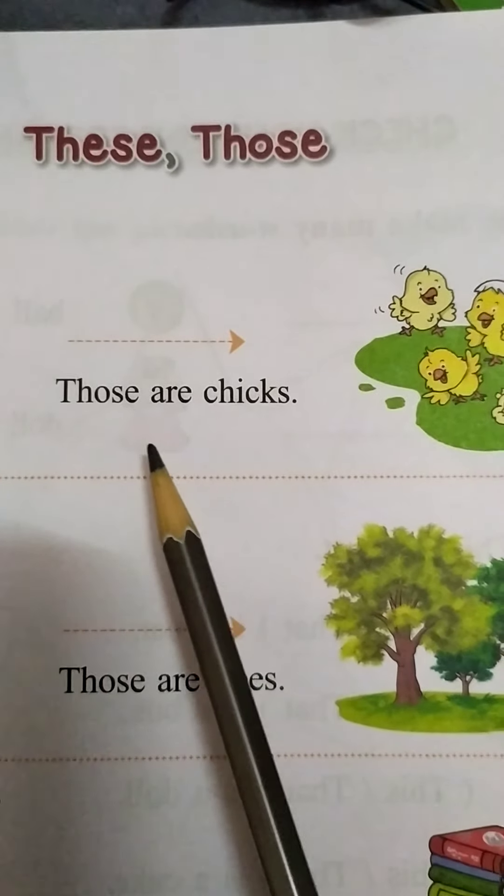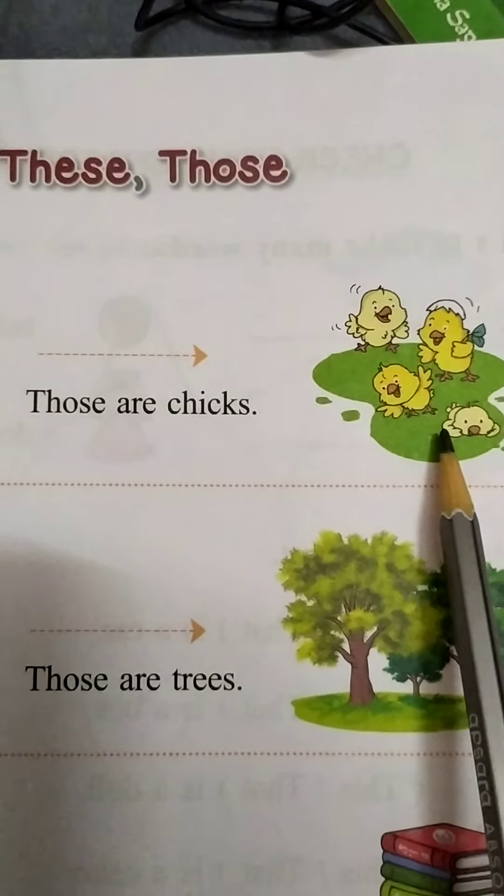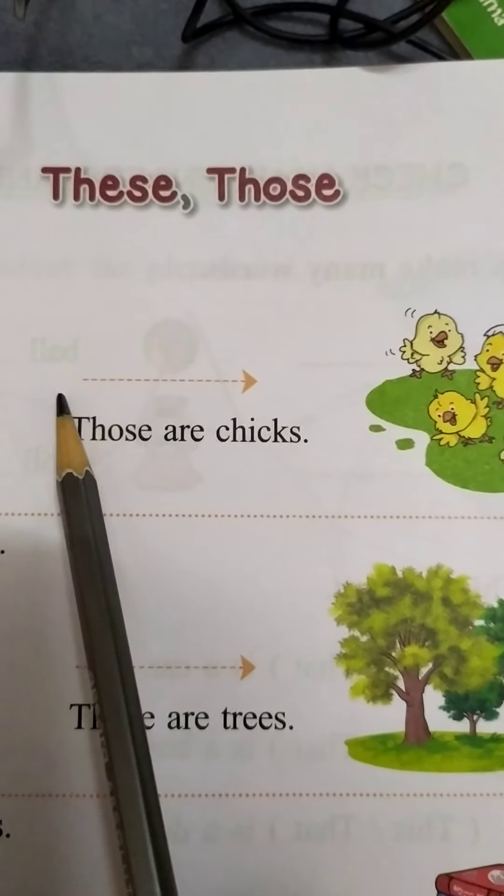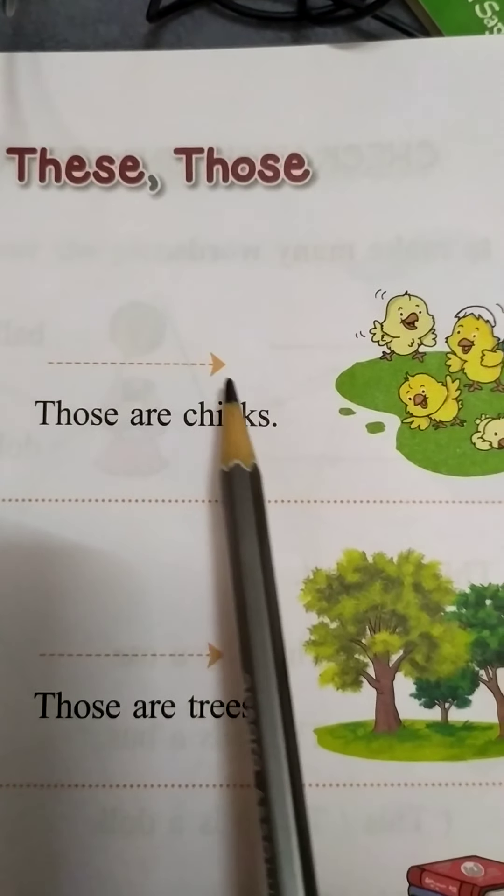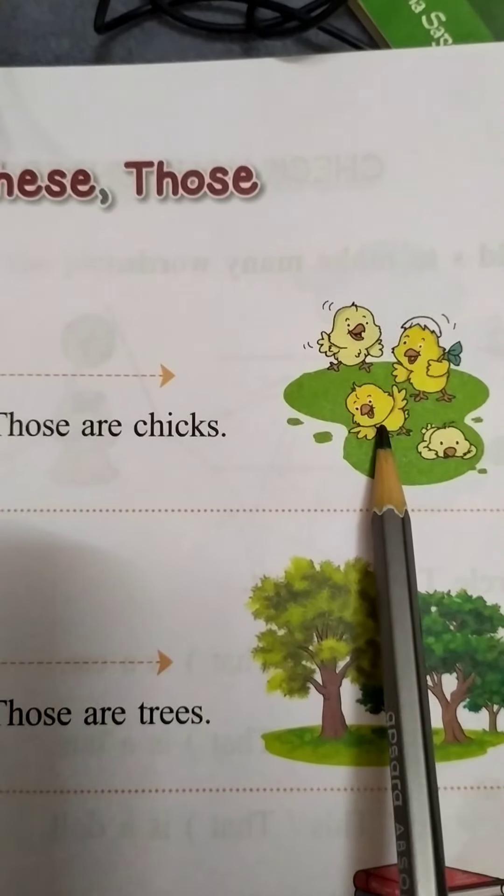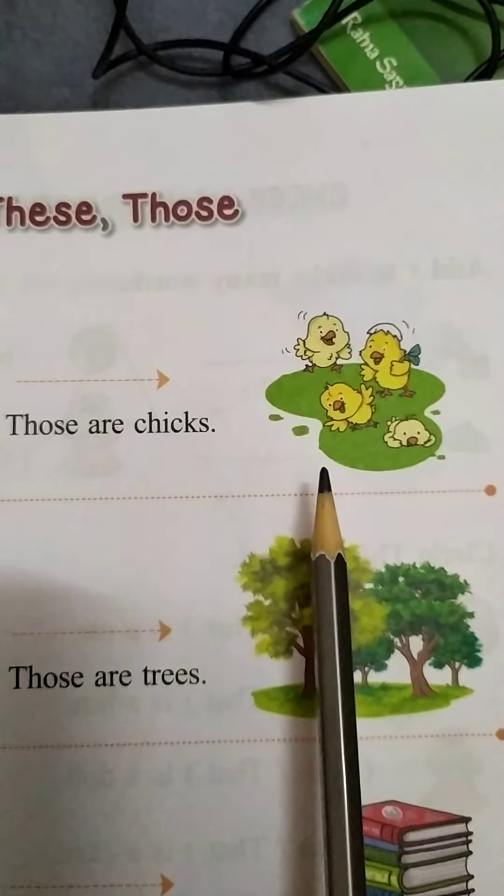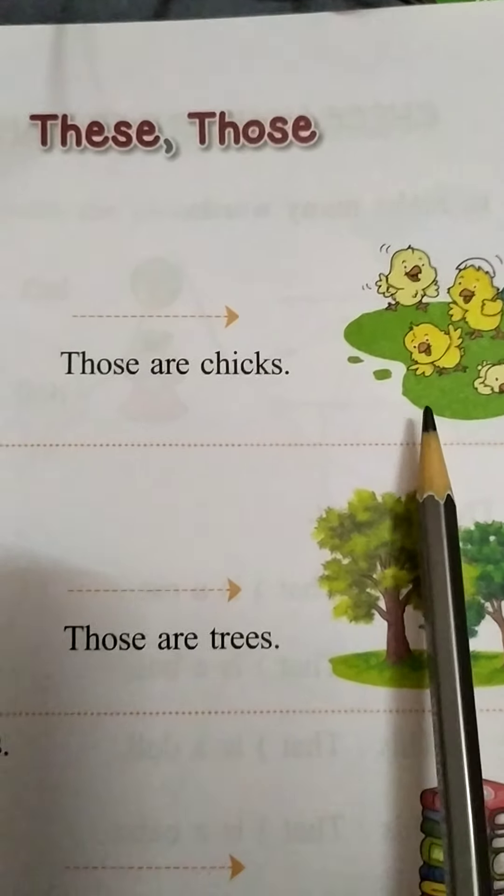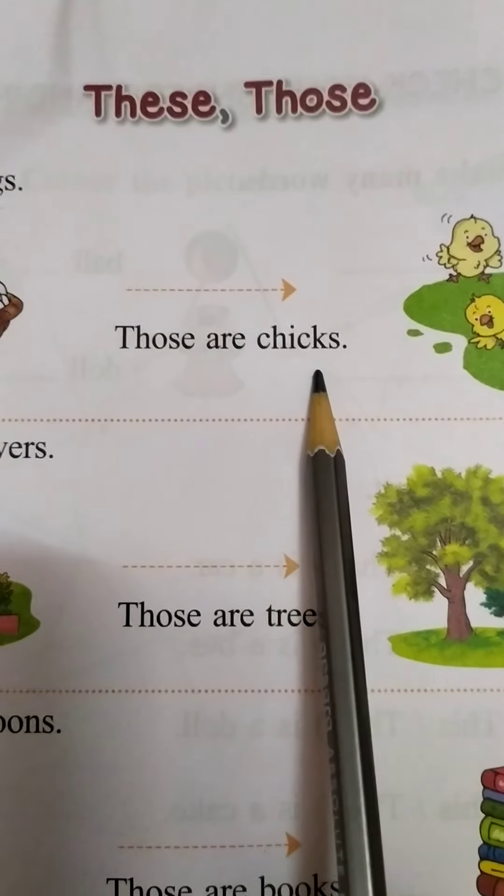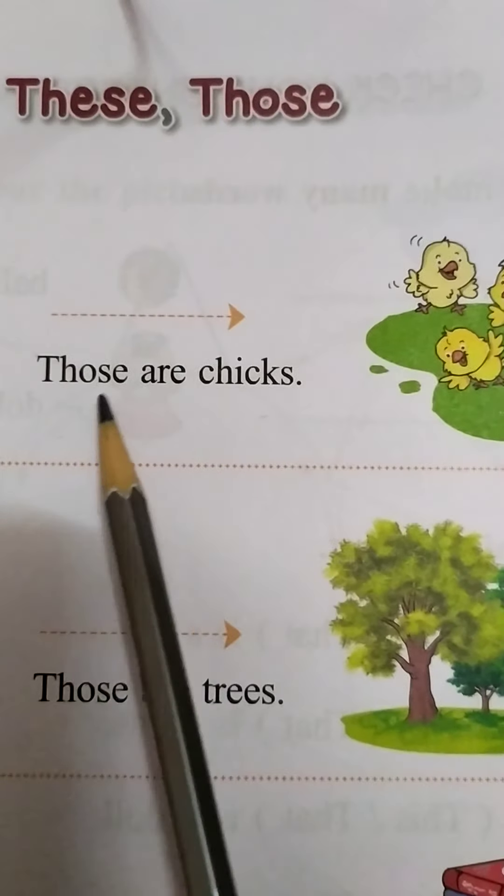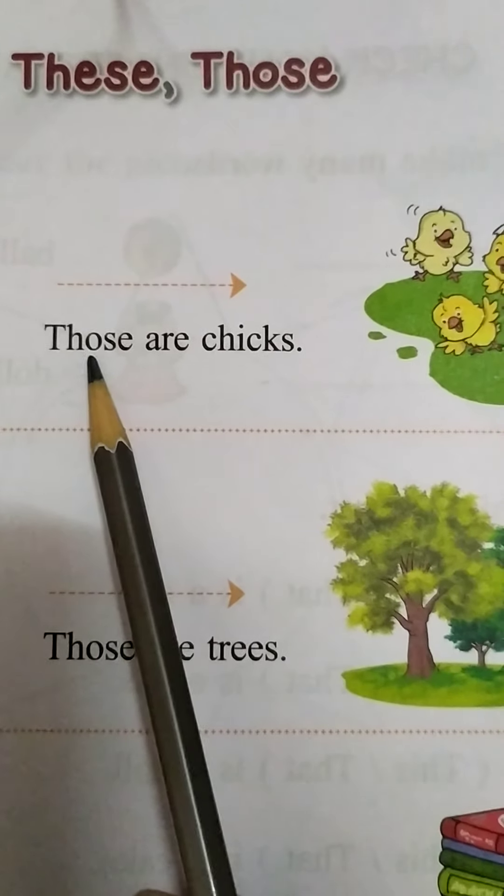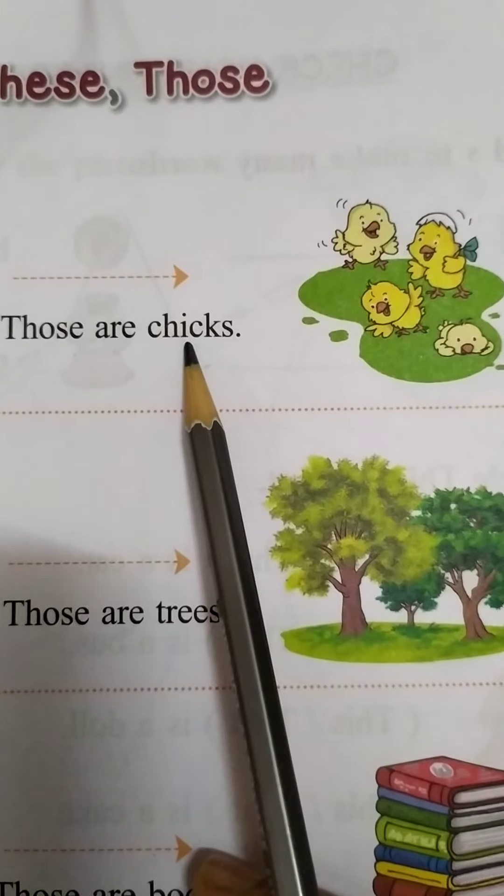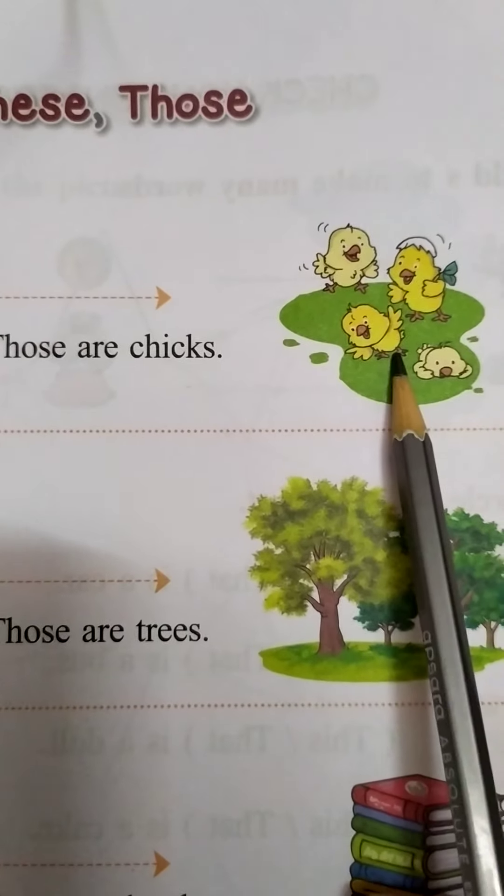Now, things which are far to us and more than one, we use those. Here, those are chicks. See children, when we are showing an arrow mark and we are pointing out the things, we use those. When we use our finger, pointer finger to show the things also, we use those. So, those are chicks. What are those? Those are chicks. T-H-O-S-E. A-R-E. C-H-I-C-K-S. Chicks.